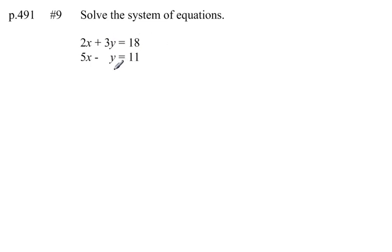What I want to do here, I'm going to multiply this bottom equation by 3. What that's going to do for me is that's going to make this a negative 3y, which will cancel out with the 3y in the top equation.